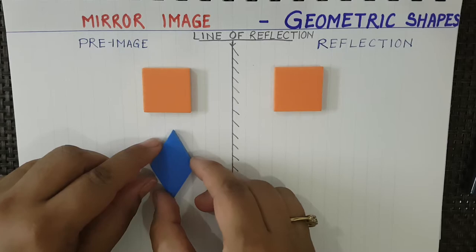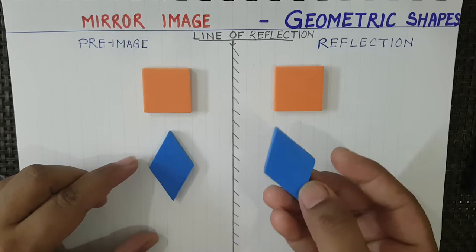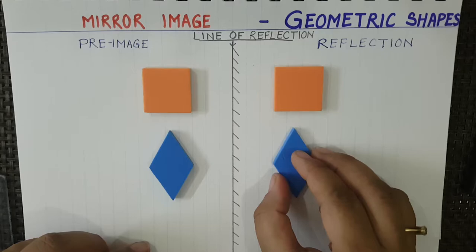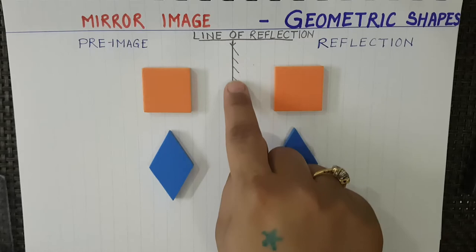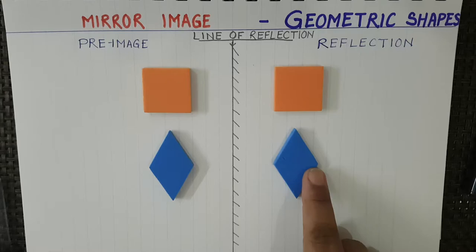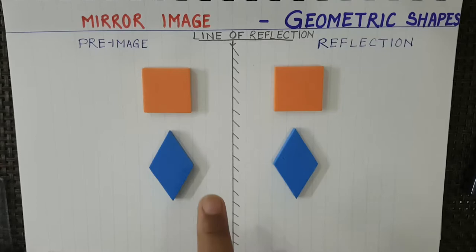Let me show you with a diamond shape. The diamond is flipped over the mirror line, and the reflection is formed. A transformation where a shape is flipped over a line of reflection — we call that line the mirror line. The shape faces the opposite direction.